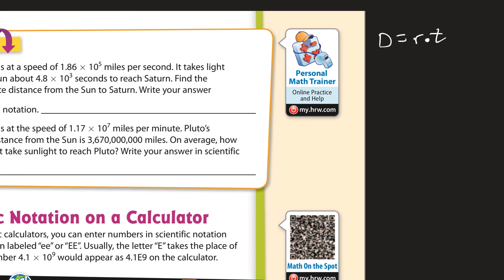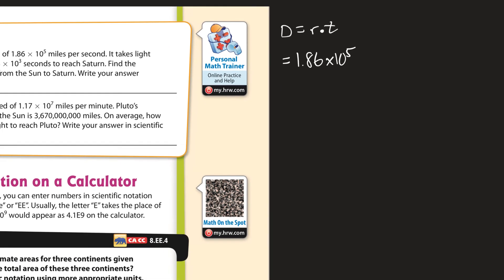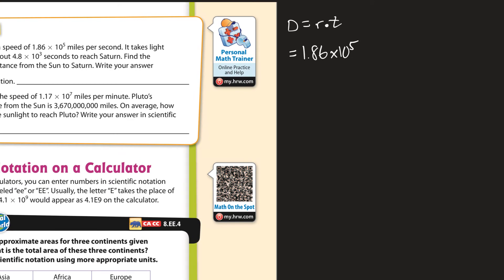And so the distance. So the rate, they tell us the rate right here. The rate is that many miles per second. So it's going to be 1.86 times 10 to the 5th. I'm going to make this a little bit smaller here. And I'll do this. Times 4.8 times 10 to the 3rd.